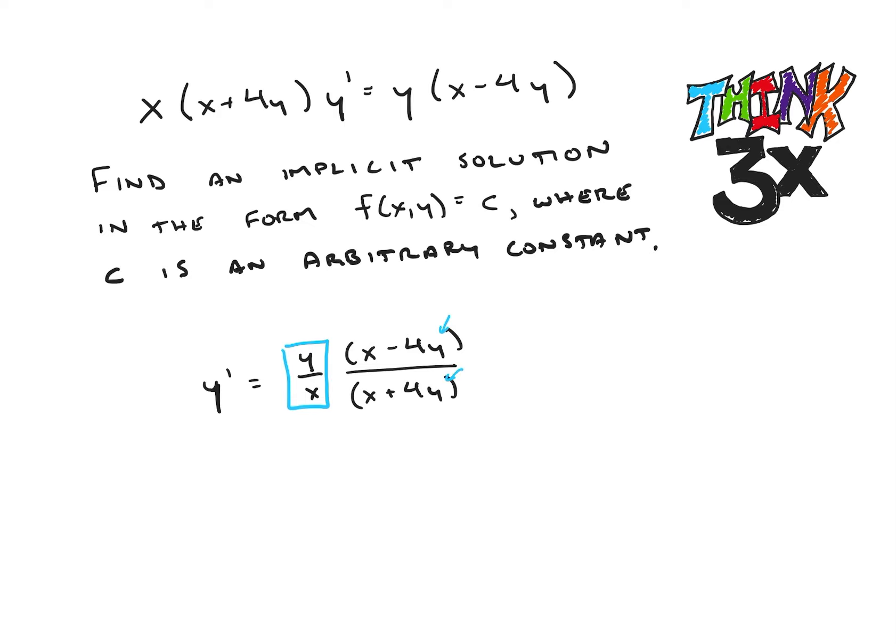And I noticed that if I divided the top and the bottom by x, I would have y over x terms in my expressions in the parentheses as well. So let's go ahead and do that and rewrite our function as y over x times 1 minus 4y over x over 1 plus 4 times y over x.